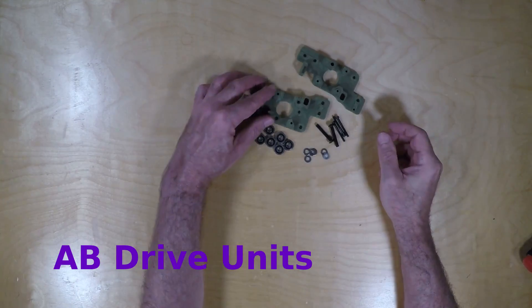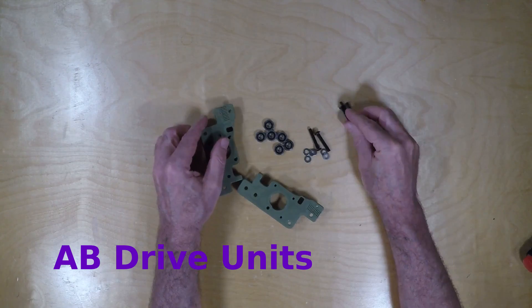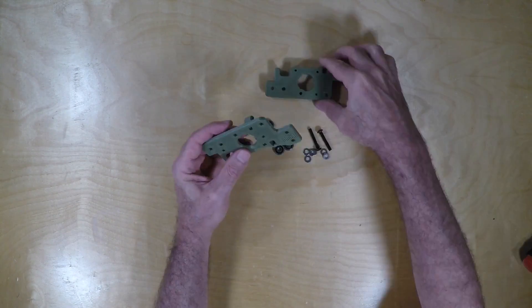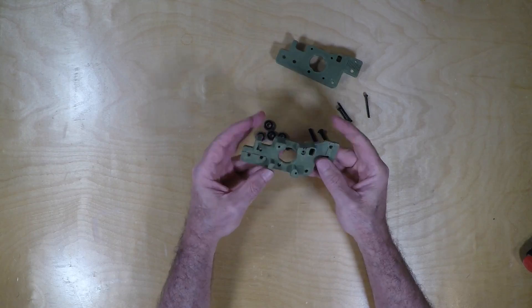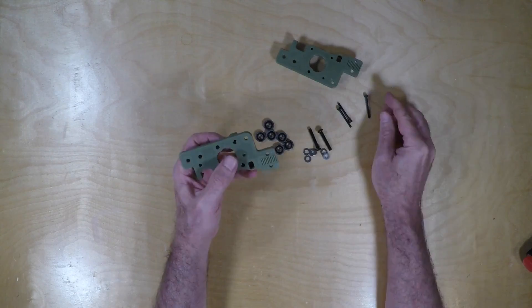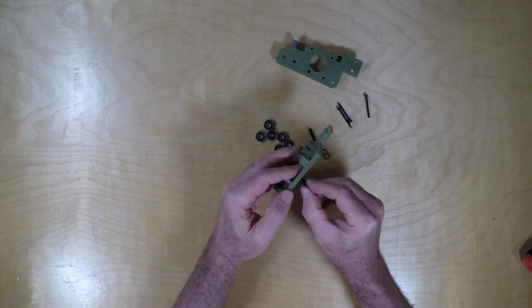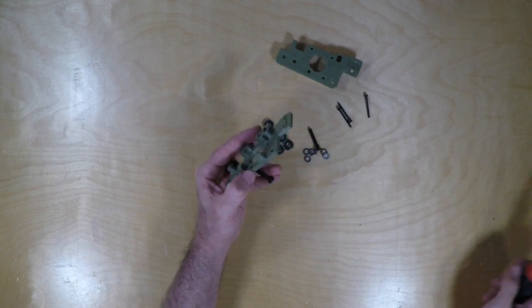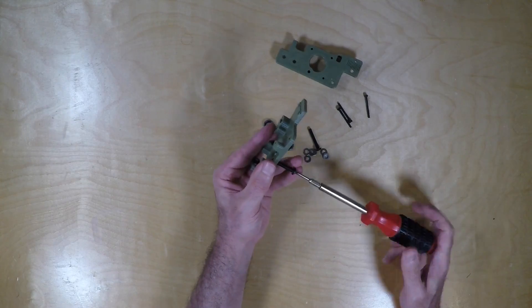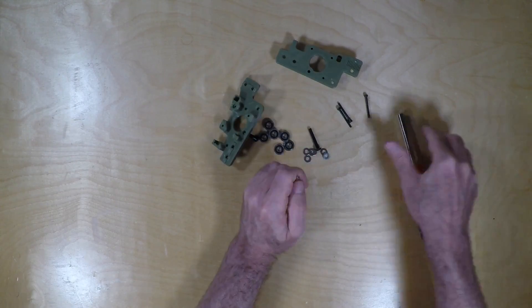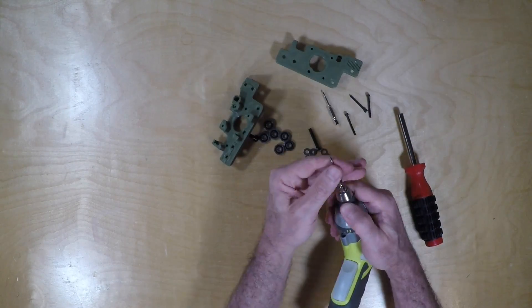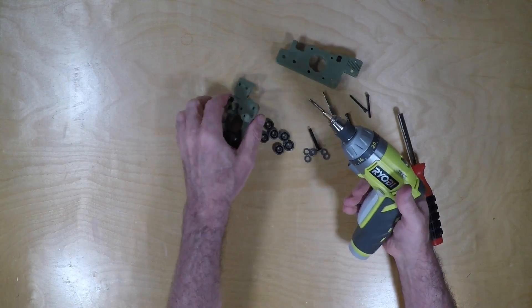Next we'll construct the AB drive units. We'll start by inserting the M5x30 hex bolts. They don't exactly slide in, so you'll find you'll have to screw these in. I'm going to go ahead and use an electric screwdriver to speed this up.